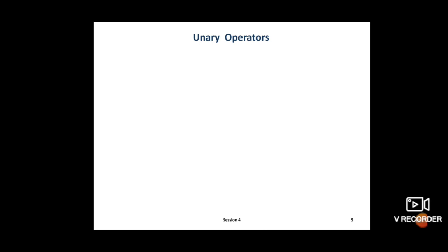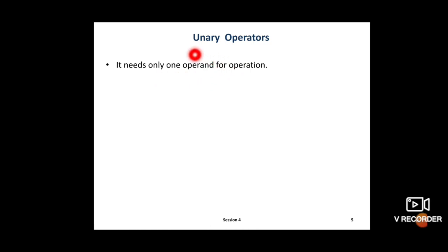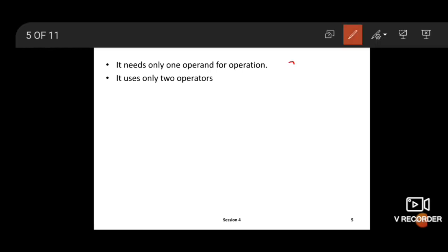Let's see them one by one. First is the unary operator. Unary operator means it needs only one operand for the operation. Unary means 'only one.' For example, a plus b uses two operands: a and b. But in unary operators, only one operand is needed.